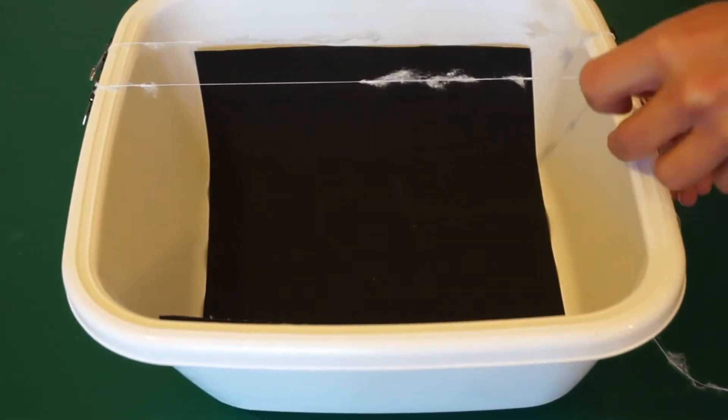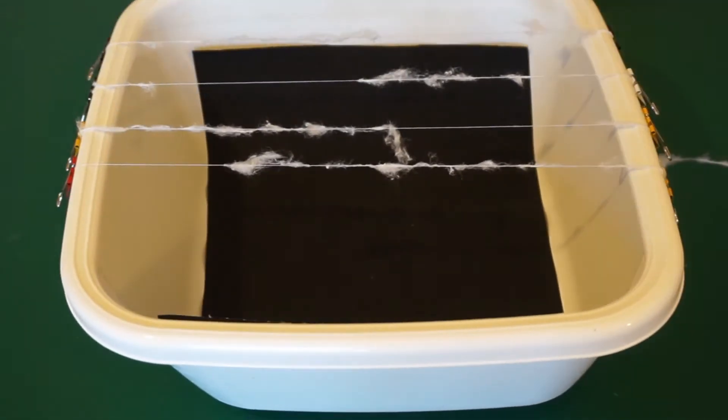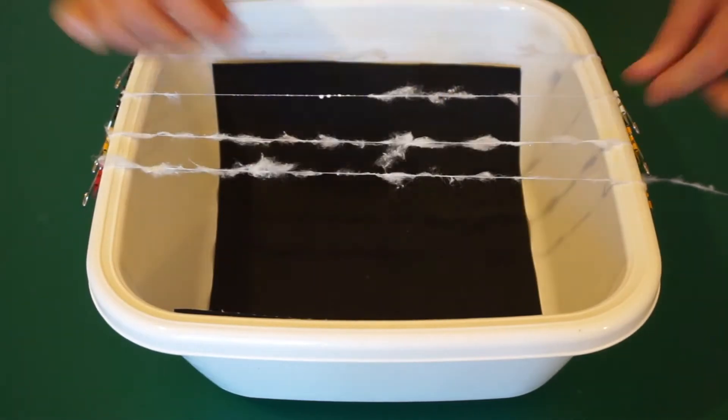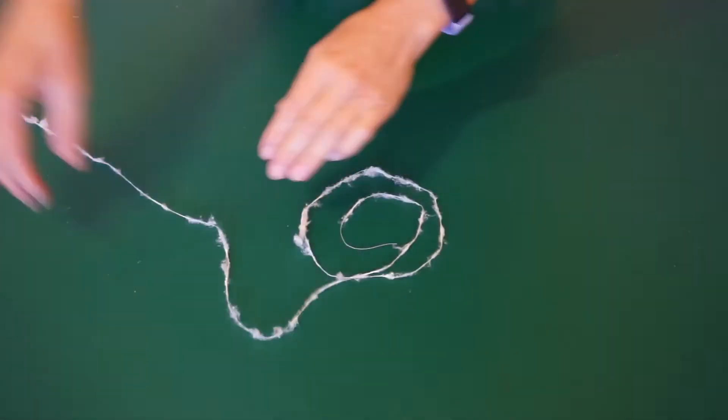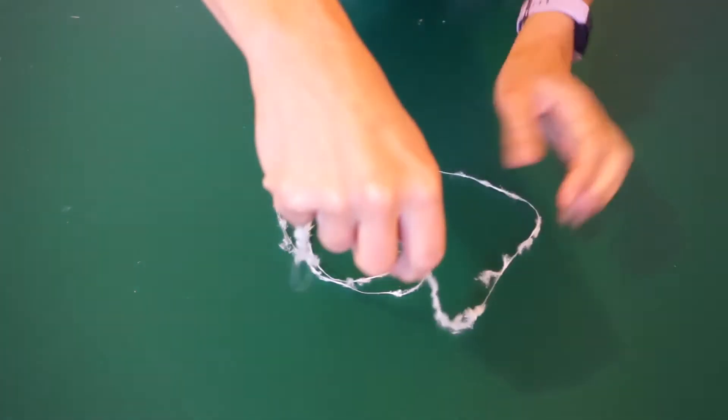I left the strands to dry for a few minutes and then moved the threads along so I could fill in the gaps where the bulldog clips had been. I was really pleased with the final result, which had a nice gossamer texture but didn't fall apart.